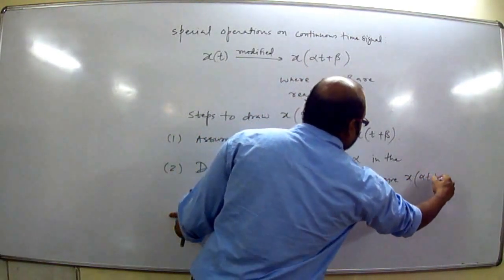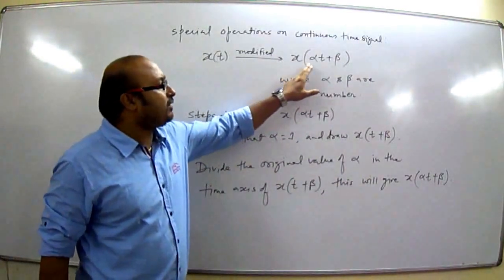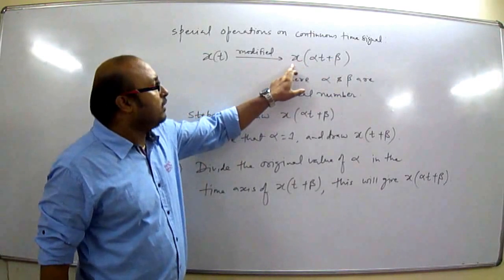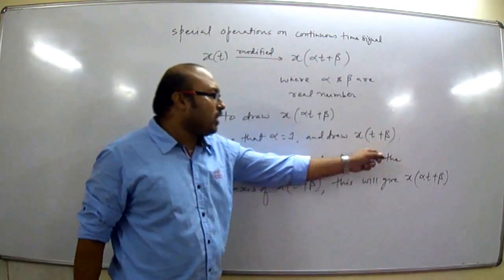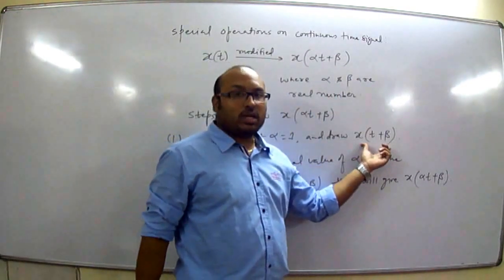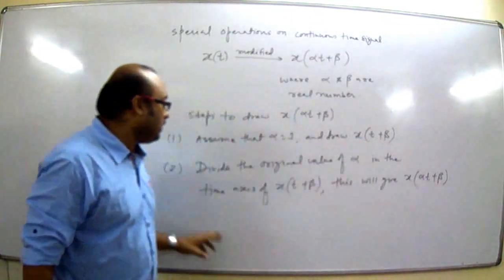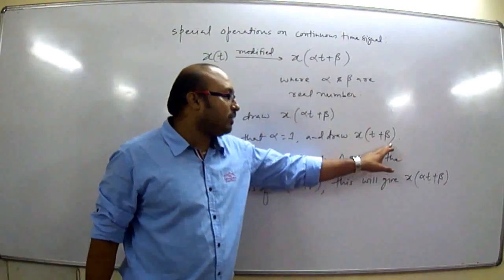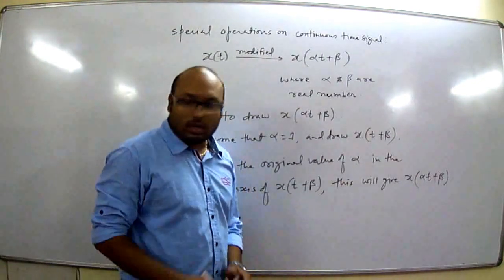This will give x(αt + β). So to modify x(t) in the form of x(αt + β): first, assume α = 1, then the signal becomes x(t + β). We draw x(t + β) — if β is positive then x(t) will be advanced, and if β is negative then x(t) will be delayed. Then we divide the original value of α in the time axis of x(t + β) to get x(αt + β).